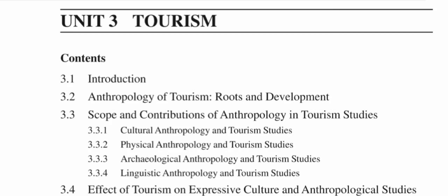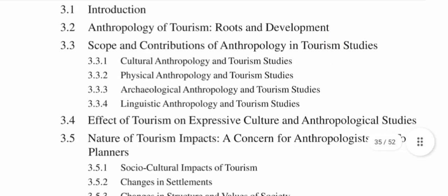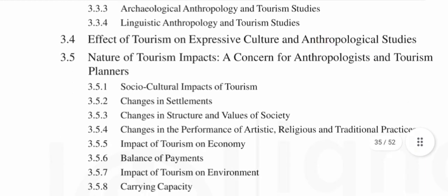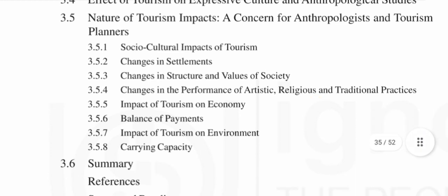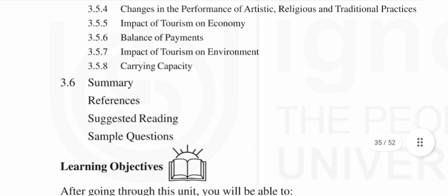In the scope and contribution section, we will discuss four topics: cultural anthropology and tourism studies, physical anthropology and tourism studies, archaeological anthropology and tourism studies, and linguistic anthropology and tourism studies. After that we will discuss the effect of tourism on expressive culture and anthropological studies, then the nature of tourism impacts — a concern for anthropologists and tourism planners. This covers eight topics: socio-cultural impact of tourism, changes in settlements, changes in structure and values of society, changes in the performance of artistic, religious and traditional practices, impact of tourism on economy, balance of payment, impact of tourism on environment, carrying capacity, and overall we will discuss a summary.